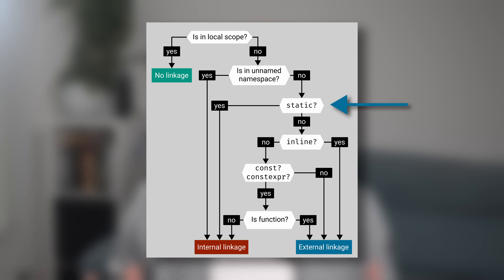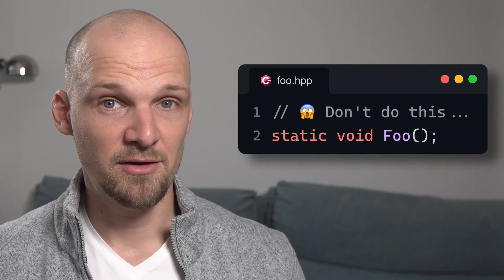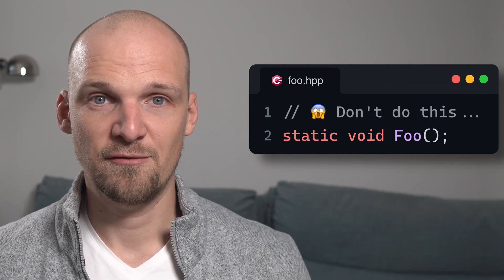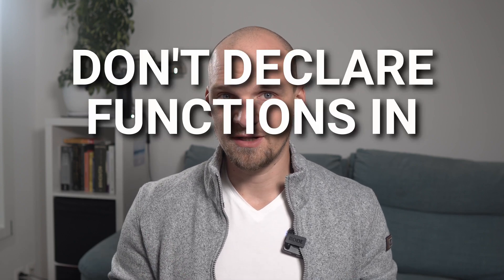Now that we understand more about linkage, let's return to the topic we actually wanted to chat about: static and why we mostly don't want to use it for freestanding functions and data. As you can see from the flowchart, static has something of a superpower to decide if some entity has internal or external linkage. Anything we mark as static will definitely have internal linkage and will only be visible within the same translation unit it is defined in. One consequence is that it makes very little sense to declare and not define a static function in a header file, since it will have to be defined in every source file that includes the header, and each definition is only visible within that source file. So don't declare functions in header files as static.